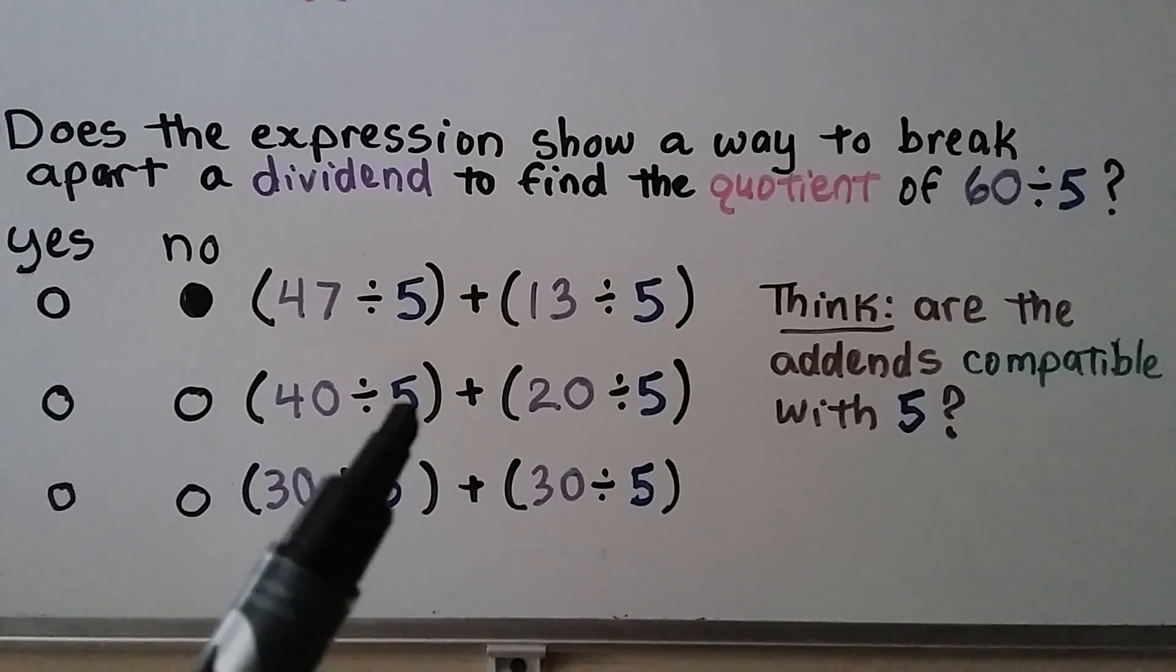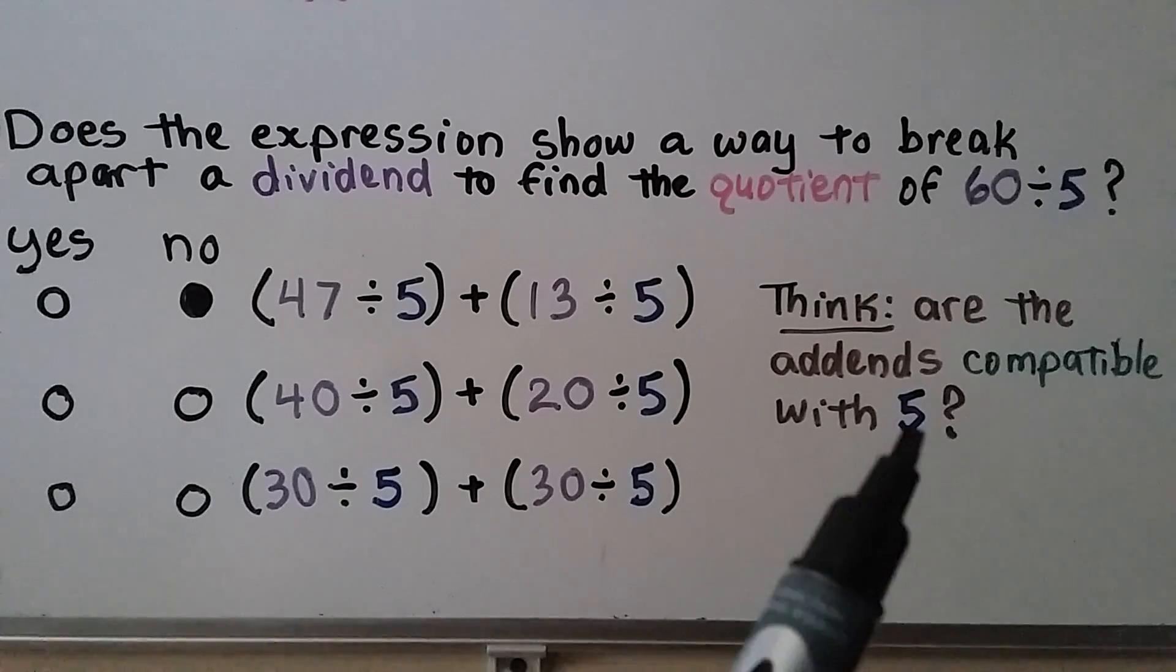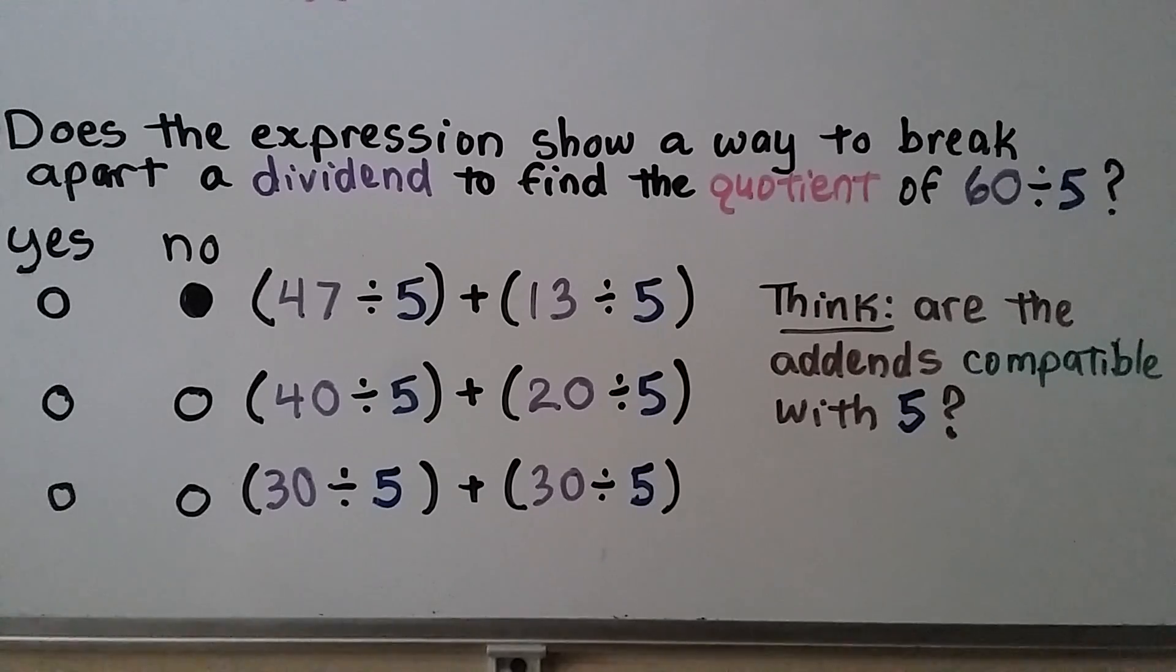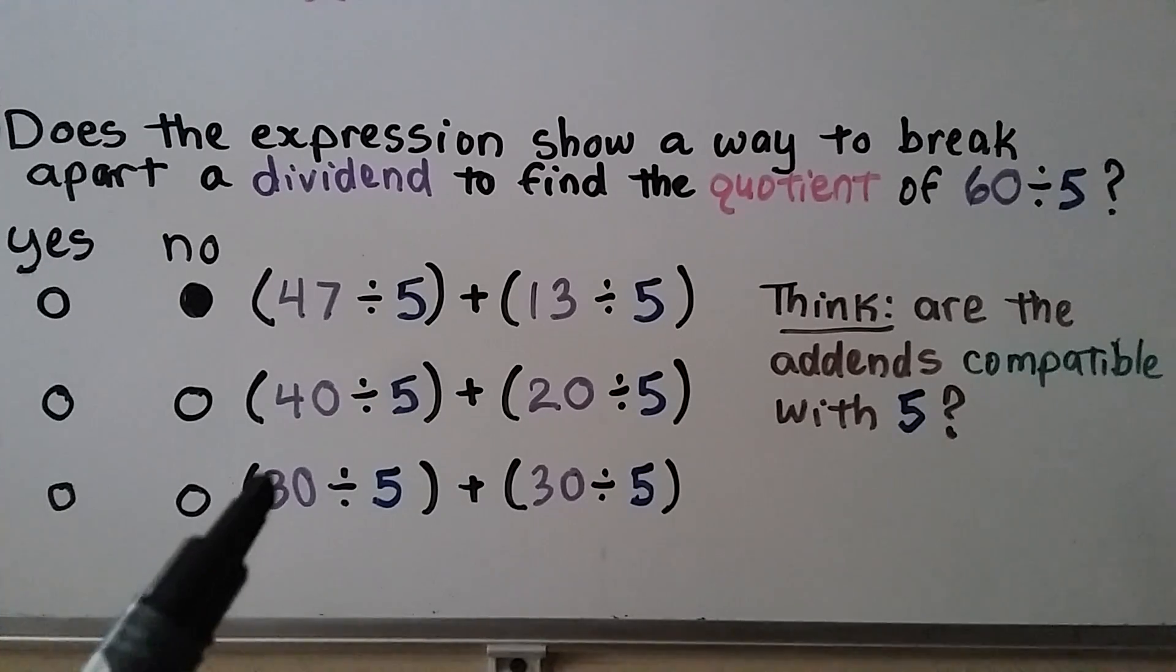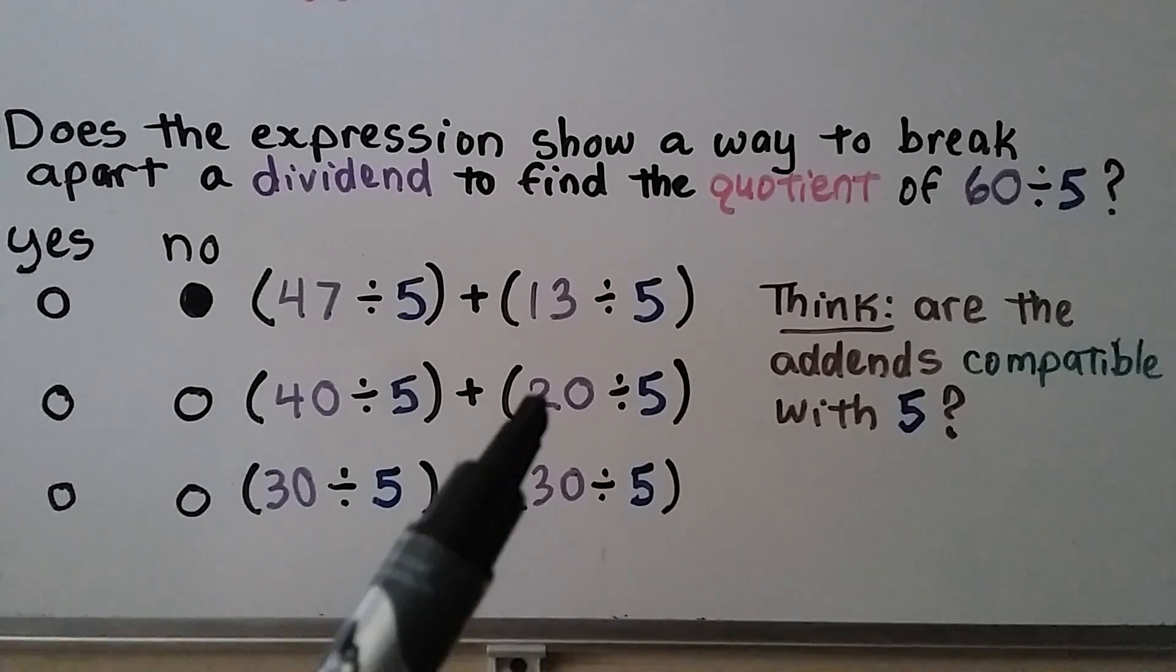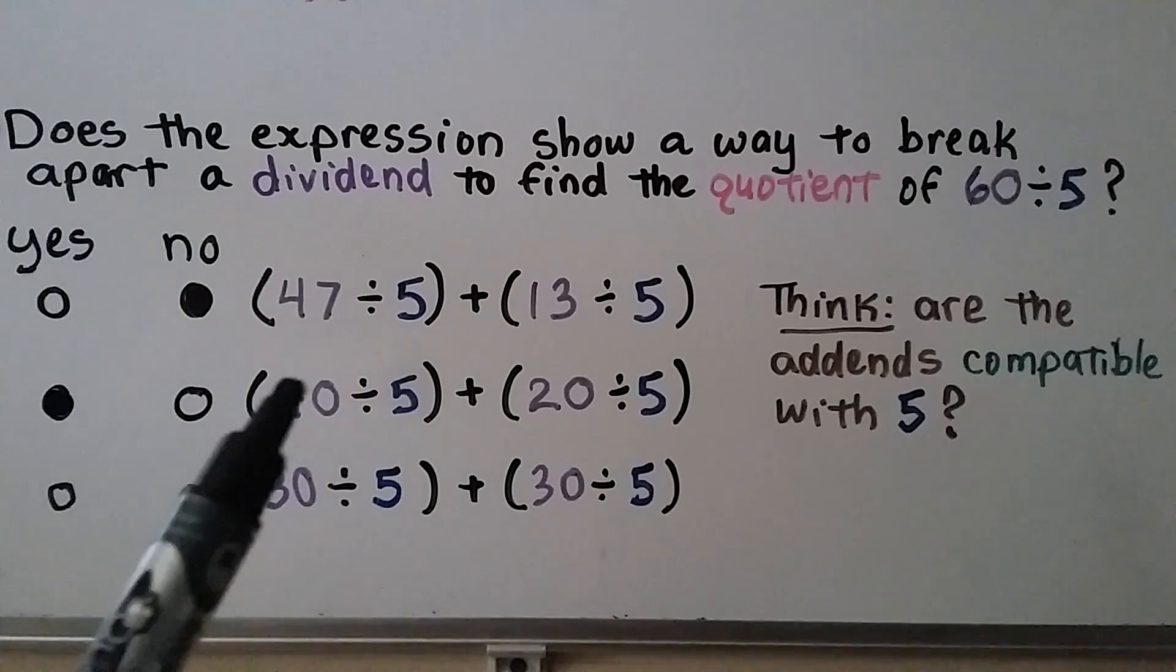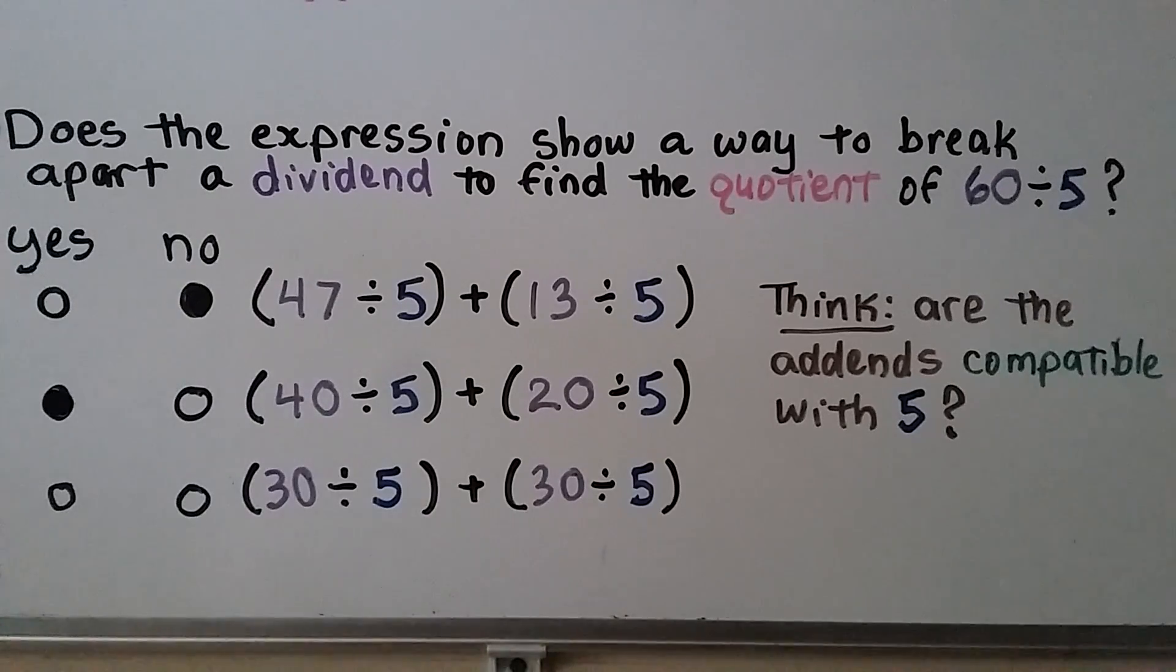What about 40 divided by 5 plus 20 divided by 5? Are 40 and 20 compatible with 5? Are they multiples of 5? When you think of the 5 times facts, are 40 and 20 some of the products? Yes, they are. They are compatible. And they would show a way to break apart 60 divided by 5.